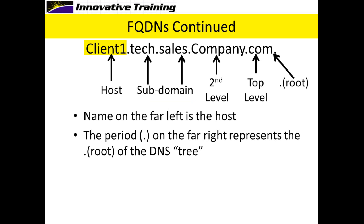You can see Client 1 is in a domain called tag, in a domain called sales, in a domain called company, in a domain called .com. That's the path to Client 1 in the DNS tree. And the fully qualified domain name becomes a map that the DNS servers can use to resolve that host name to an IP address.